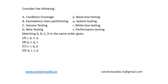This is a question from software engineering. We are given a table. On the left column we have conditional coverage, equivalence class partition, volume testing, and beta testing. On the right column we have black box testing, system testing, white box testing, and performance testing. Matching a, b, c, d in the same order gives four options.